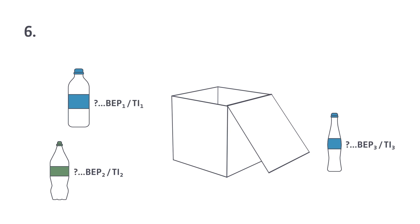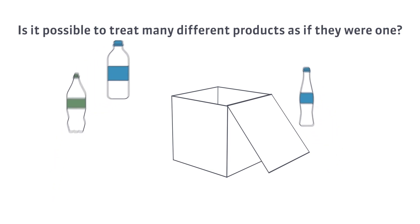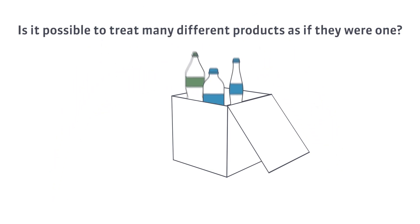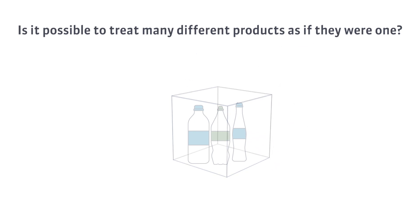It's time to answer the opening question: is it possible to treat many different products as if they were one? Yes — we can treat various products as a package and then treat one package as if it were a single product.